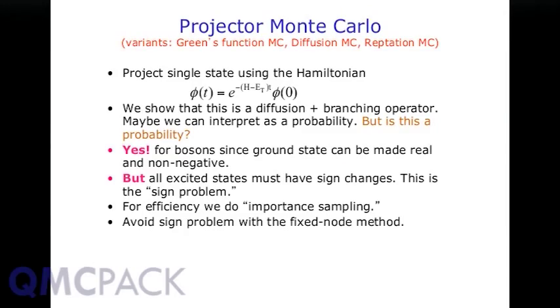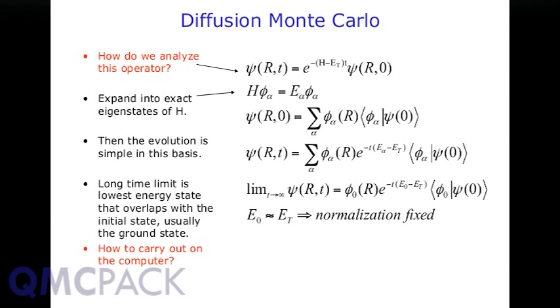In general, wave functions can't be treated as probabilities. We often call it the Fermion sign problem, but it applies to any many-body excitation. There is a way to avoid it — the fixed node or fixed phase method — but that introduces an approximation we'll discuss later.